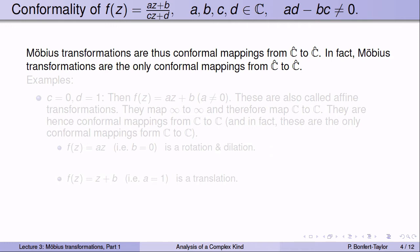Möbius transformations are therefore conformal mappings from ℂ̂ to ℂ̂. In fact, Möbius transformations are the only conformal mappings from ℂ̂ to ℂ̂. If you ask for a conformal mapping defined on ℂ̂ that maps it to ℂ̂, the only things you will find are the Möbius transformations.